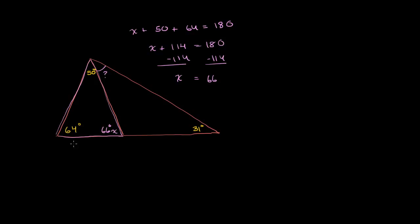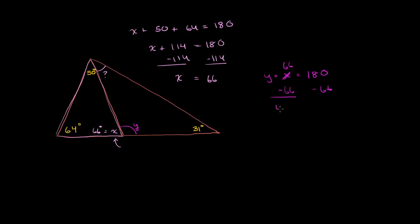Now if x is 66 degrees, we know that angle is supplementary with this angle right over here — their outer sides form a straight angle and they are adjacent. So if we call this angle y, we know that y plus x equals 180 degrees. Since x is 66 degrees, we subtract 66 from both sides, and y is equal to 180 minus 66, which is 114. Notice this 114 was the exact same sum of those two angles in the first triangle.